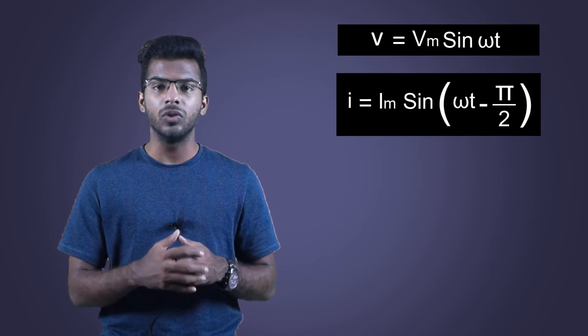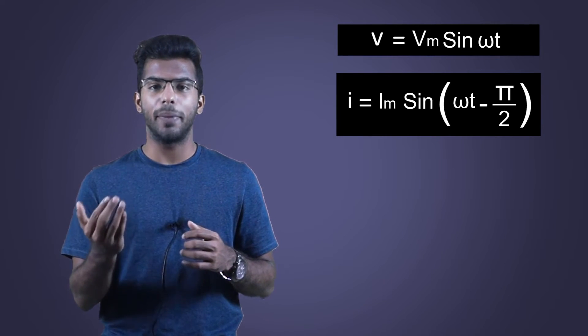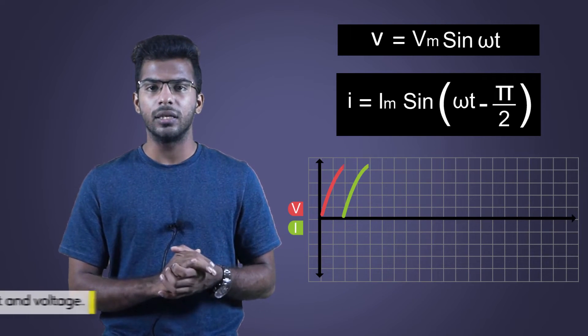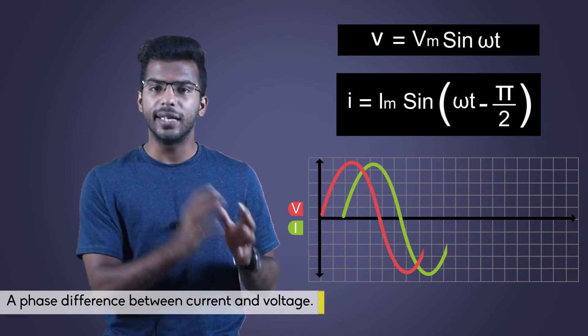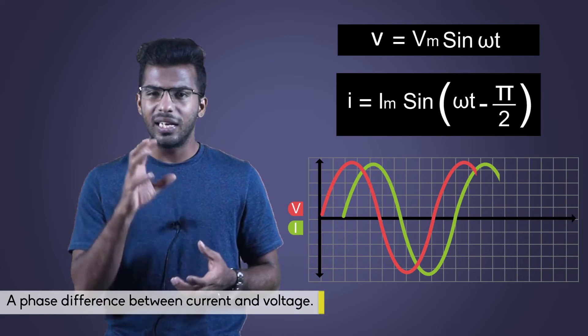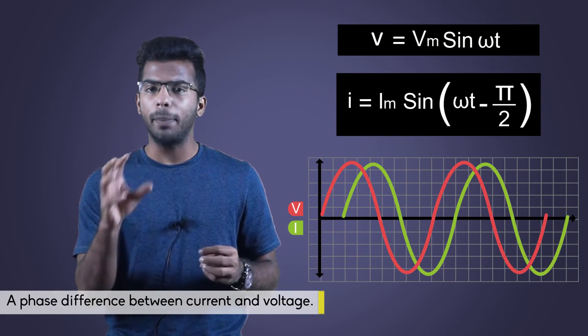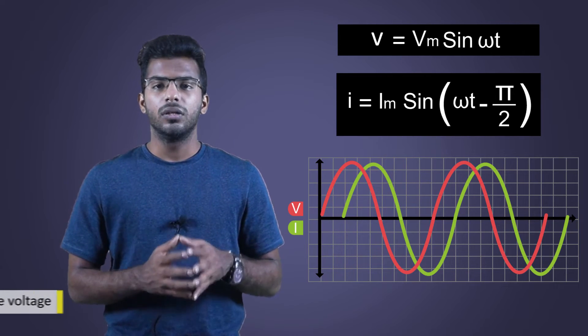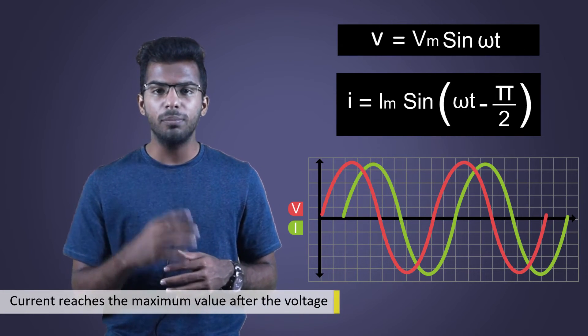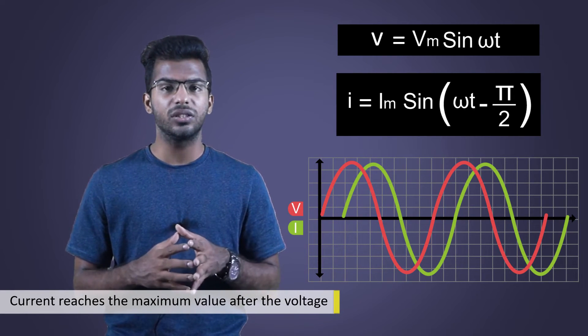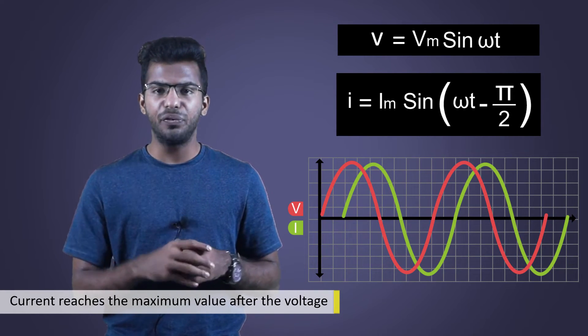Let's compare the expressions of voltage and current of pure inductance circuit. V is equal to Vm sin omega t and I is equal to Im sin omega t minus pi by 2. This clearly tells us that there is a phase difference between the current and voltage. Current is lagging by 90 degrees or pi by 2 radians from voltage. This means current reaches the maximum value after the voltage has reached its maximum. The difference is 90 degrees.